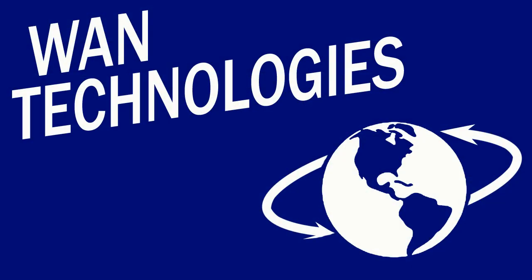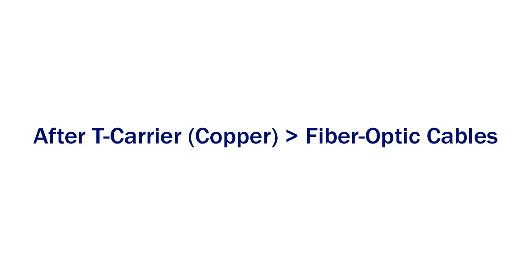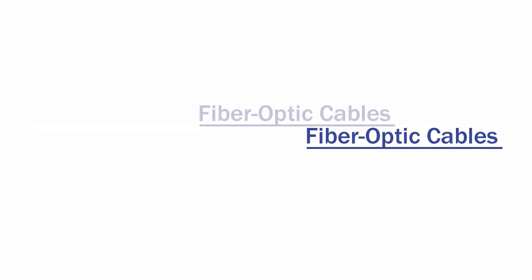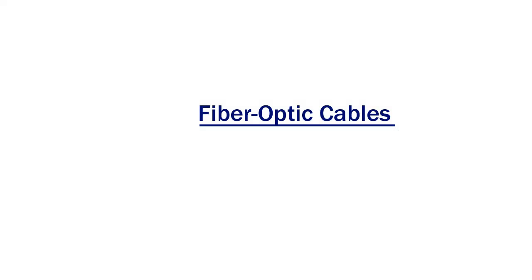We're looking at more WAN technologies in this short video. This time we're talking about the technologies that came immediately after T carriers, which were used until the mid-1980s. It was then, around the mid-1980s, that fiber optic cabling took over as the primary transmission or communication method for long-distance carriers all over the world.